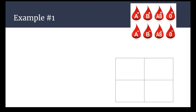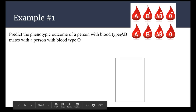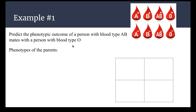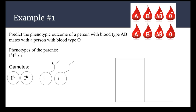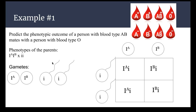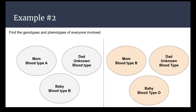Here's a worked example: a person with type AB and a person with type O. AB must be IA/IB, and type O can only be lowercase i/lowercase i. The gametes from the AB parent are IA and IB; both gametes from the O parent are lowercase i. Putting that into the Punnett square, half the offspring are type A (IA/i) and half are type B (IB/i) — a one-to-one ratio between type A and type B.